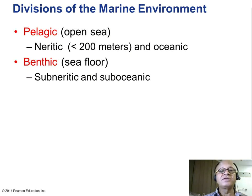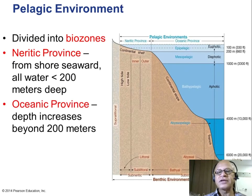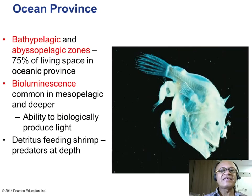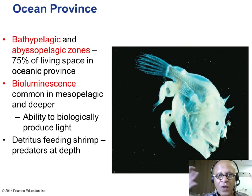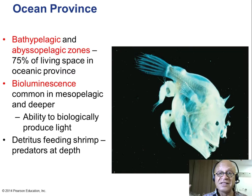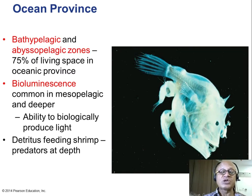Let's repeat some of the points we looked at already. Bathypelagic and abyssopelagic — the ocean is very vast. The wide open ocean occupies 75% of the living space in the oceanic province. The shelf area is small, and coastlines add up to a significant part, but the open ocean — imagine the Pacific, then add the Atlantic, Indian, Southern Ocean, and Arctic Ocean — you have a massive amount of oceanic province.